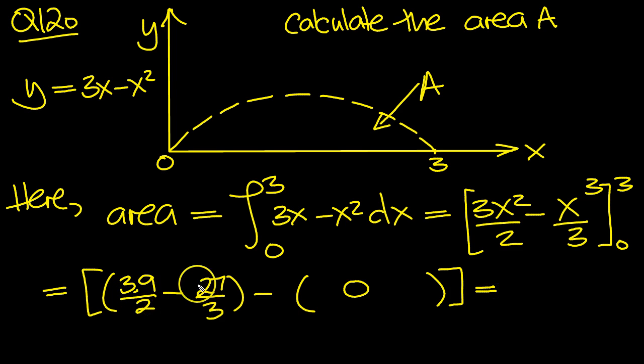So this is 27 over 2 minus 27 over 3, and it's 27 basically a half minus a third which is a sixth. You can tap it in the calculator if you need to. 27 over 6 units squared which is 4, 6 into 24 and then that leaves 3 more. 3 over 6 is a half, so it's 4 and a half units squared.